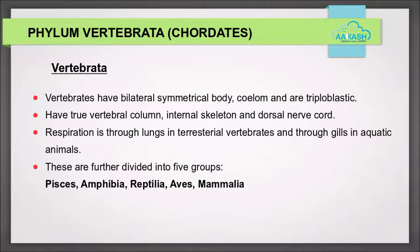Phylum Vertebrata: chordates and vertebrates have a bilaterally symmetrical body and are triploblastic. They have a vertebral column, internal skeleton, and a dorsal nerve cord. Respiration in these animals is through lungs in terrestrial vertebrates and through gills in aquatic animals. These animals are further divided into five groups: Pisces, Amphibia, Reptilia, Aves, and Mammalia.